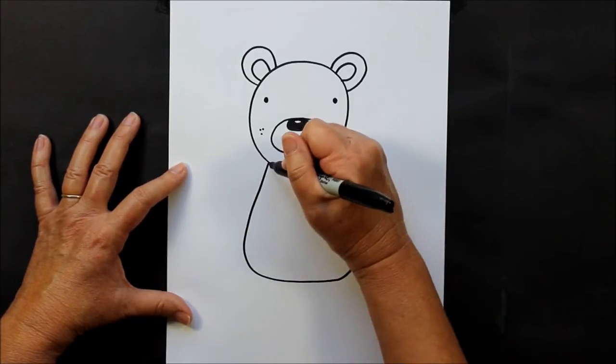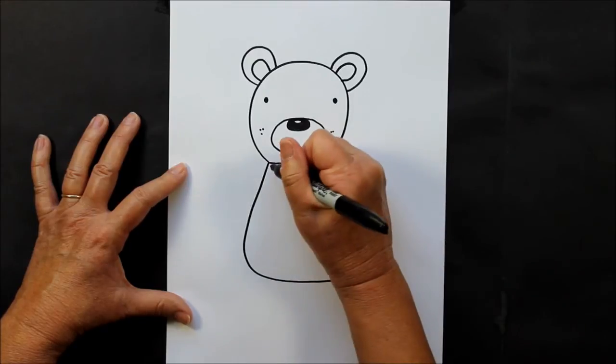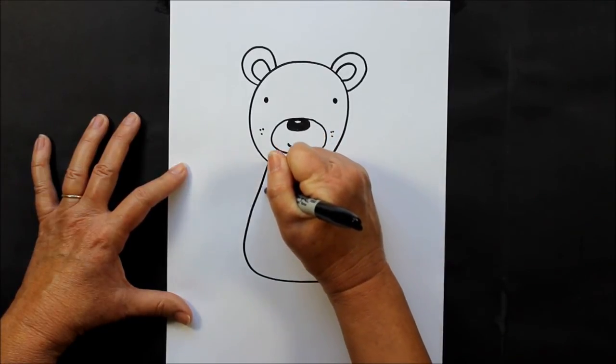On the inside of these, starting right here at the corner, you're going to make his little hands and paws like this.